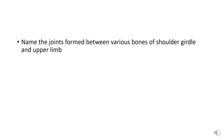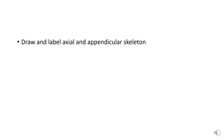There is also an STQ question: name the joints formed between the various bones of the shoulder girdle and upper limb. You have to enumerate all the joints formed among the bones of the shoulder girdle and the upper limb. Whenever a question says 'name' or 'enumerate,' you only need to write the names, not the details.